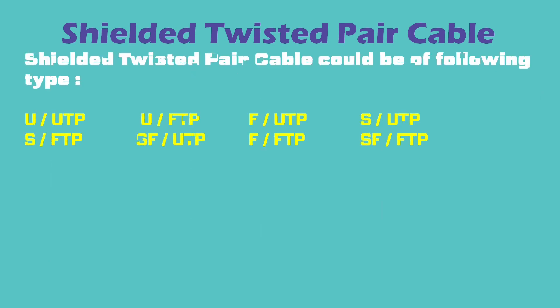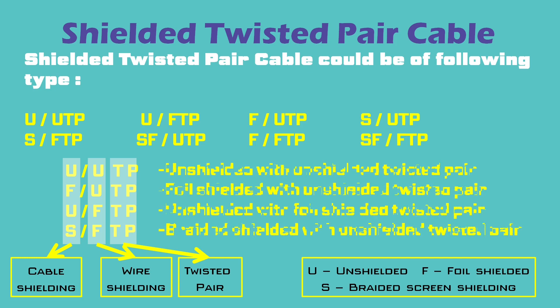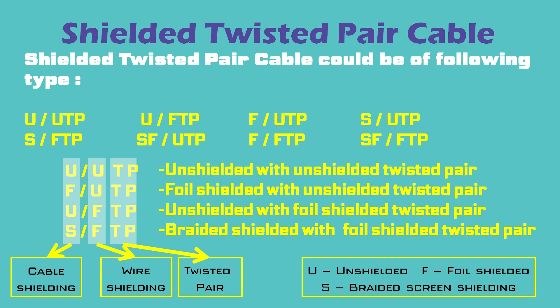Now, being aware of the two basic categories of twisted pair cable, we can study the various types. The decoding of cable names can be done easily: the first letter stands for cable shielding, the second letter for individual wire pair shielding. U stands for unshielded, S for braided screen shielding, F for foil shielding, and TP for twisted pair. For example, U/UTP is an unshielded cable with unshielded twisted pairs; F/UTP is a foil-shielded cable with unshielded twisted pairs; and U/FTP is an unshielded cable with foil-shielded twisted pairs.